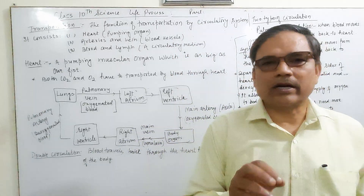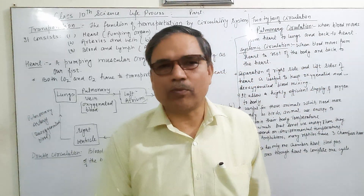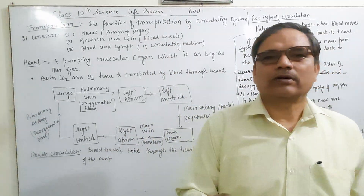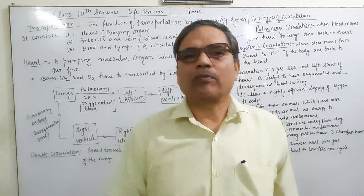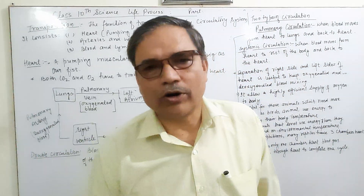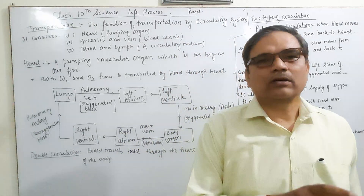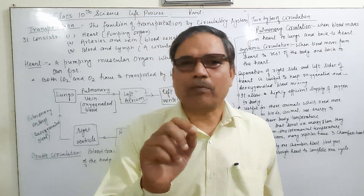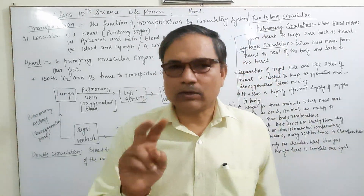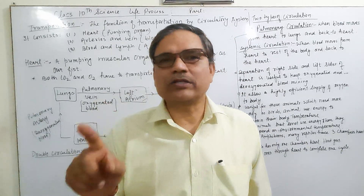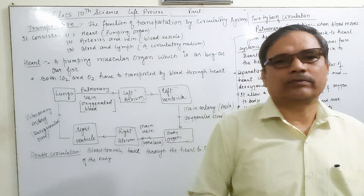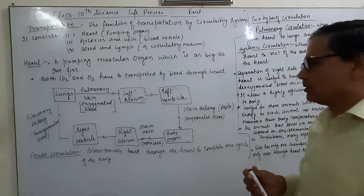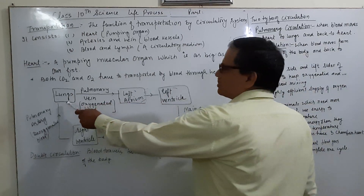Vena cava is the largest vein which receives impure blood from all parts of the body. The aorta is the largest artery which supplies blood from the heart to all parts of the body. In this way, blood passes through the heart to complete one cycle. Blood has to pass through the heart two times to complete one circulation — this is known as double circulation.